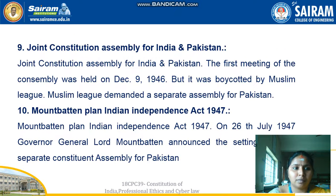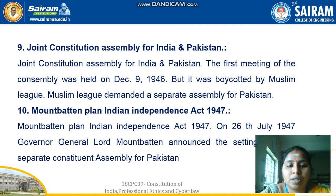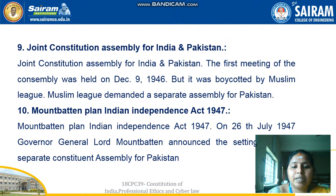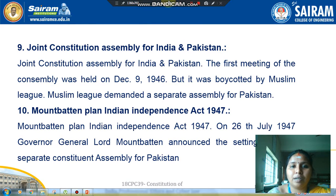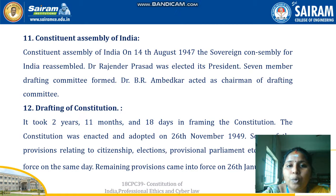The Joint Constituent Assembly for India and Pakistan held its first meeting on 9th December 1946, but it was boycotted by the Muslim League. Next is the Mountbatten Plan and the Indian Independence Act 1947. On 26th July 1947, Governor General Lord Mountbatten announced the setting up of a separate constituent assembly for Pakistan. The Constituent Assembly for India was formulated on 14th August 1947, and the Sovereign Constituent Assembly for India reassembled.